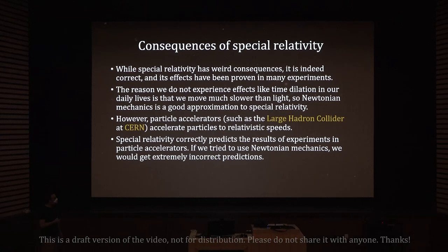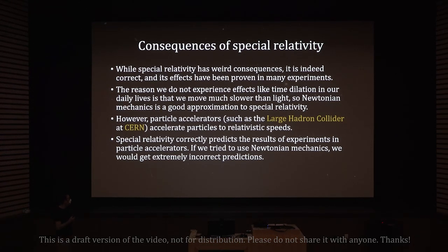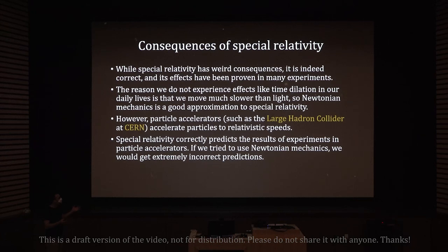Particle accelerators, such as the Large Hadron Collider at CERN, accelerate particles to very close to the speed of light, so time dilation inside particle accelerators is very significant. Special relativity correctly predicts the results of experiments in particle accelerators — if we tried to use Newtonian mechanics, we would get extremely incorrect predictions. This is proof that Newtonian mechanics is incorrect in this context, and that special relativity is correct because all its predictions are verified by these experiments.